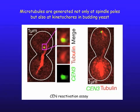So how is this game relevant to our findings in this paper? We are studying how kinetochores initially interact with microtubules extending from a spindle pole. We found that microtubules are generated not only at spindle poles, but also at kinetochores in budding yeast.